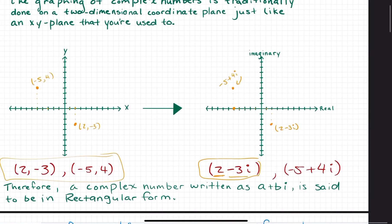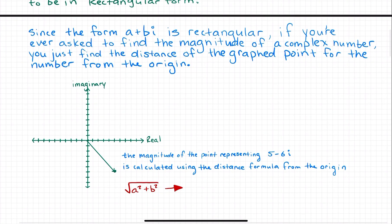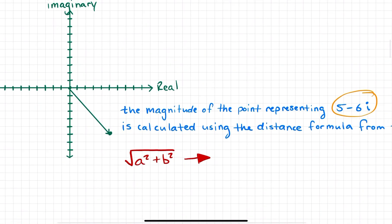Because this form of complex numbers is considered rectangular, other aspects of rectangular geometry work the same as well. For example, if I wanted to find the magnitude of the position of the complex number 5 - 6i, first I need to plot it: positive 5 in the real direction, negative 6 in the imaginary direction. I have a vector coming out from the origin of my grid touching the point that represents 5 - 6i. And if we're looking for the magnitude of this point, all we need to do is find the distance of that line, which requires the normal rectangular distance formula shown here in red.